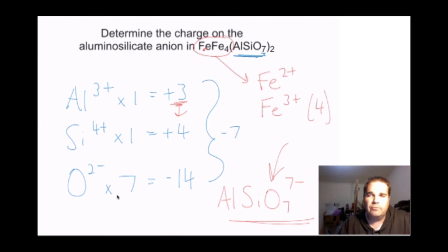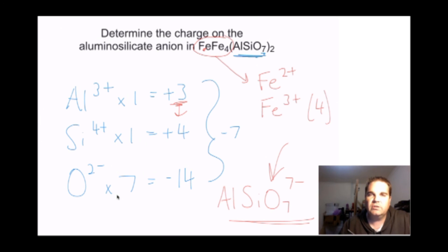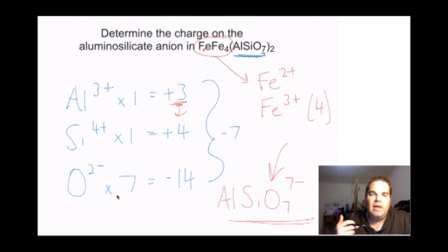Hopefully this has been reasonably straightforward. If you struggle, go back and have a look again. Try writing out some silicate formulas and work out the charge using plus 4 for silicon and minus 2 for oxygen, then try working out a formula with some metal ions. There are examples in the textbooks as well. If there are any questions, just ask.